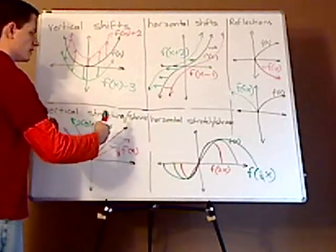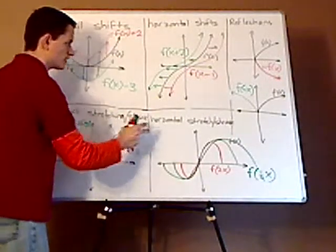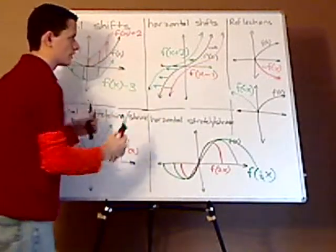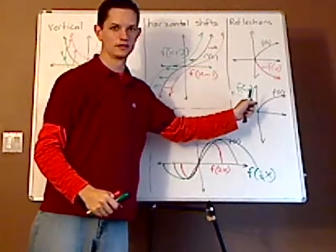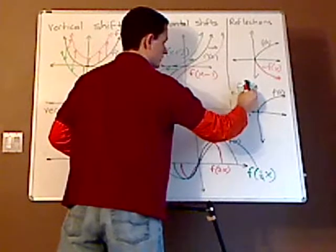So you can see by here that the stretches and the shrinks are kind of hard to see. The vertical shifts and horizontal shifts are very easy to see.